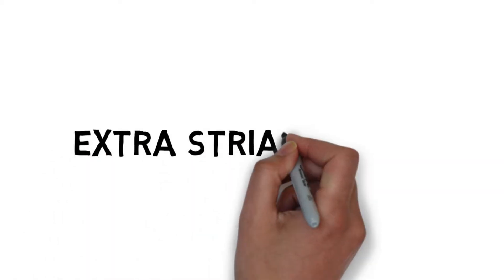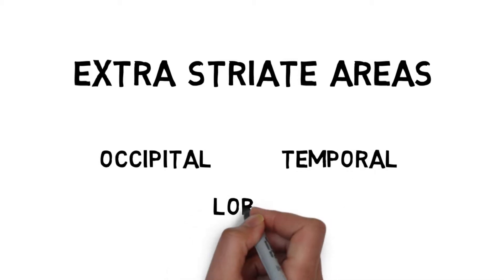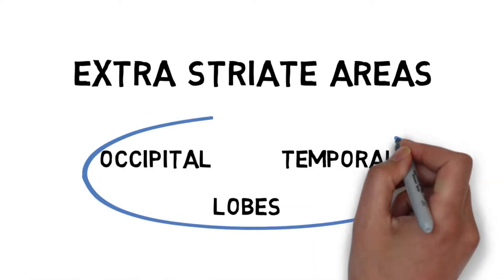In this video on the visual system, we'll be talking about the extrastriate cortex, which are areas in the occipital and temporal lobes of the brain that neurons in the striate cortex project to.